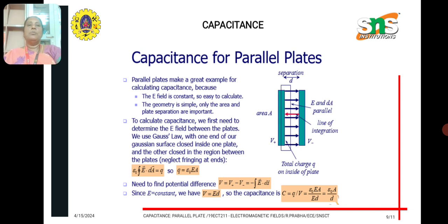Now we come to the calculation of capacitance for parallel plates. Consider two parallel plates each having area A, with a distance of separation D between them. In between the two plates there is a dielectric material with permittivity epsilon. Since the electric field is constant in this geometry, it is very easy to calculate. Only the area and plate separation are important in this case, making the parallel plate capacitance calculation a straightforward one.